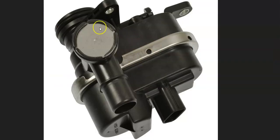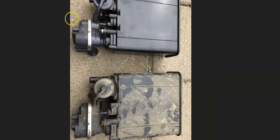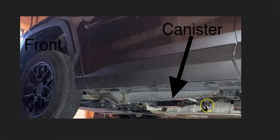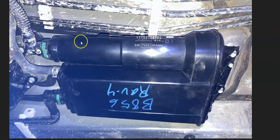When you get this code, it's pointing toward the leak detection pump having a problem, and this is usually located on the charcoal canister. The first thing to do is locate the charcoal canister, which will be up underneath the vehicle by the gas tank. Here on a 2019 Toyota RAV4, it's right up underneath the driver's side door under a metal protection cover, though it could be farther back behind the rear axle on other vehicles.